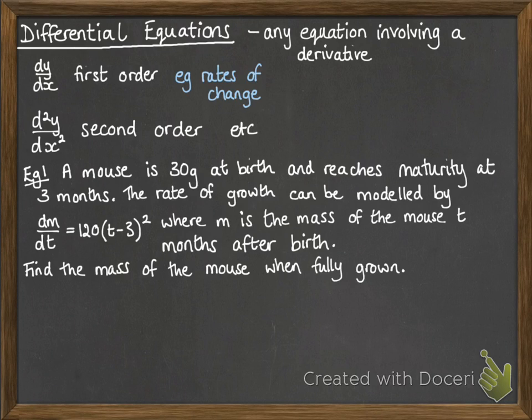So we have this example. A mouse is 30 grams when it's born, and it reaches full maturity at 3 months. The rate of growth is modeled by that equation there. m is the mass of the mouse, and t is how many months have passed after birth. We want to find the mass of the mouse when it's fully grown.